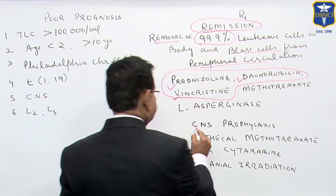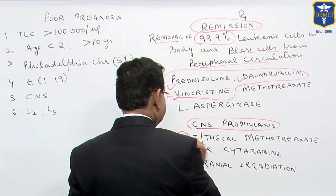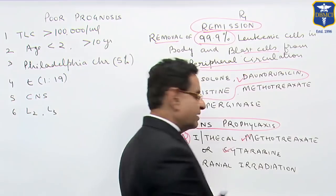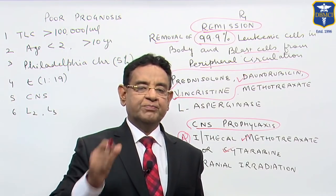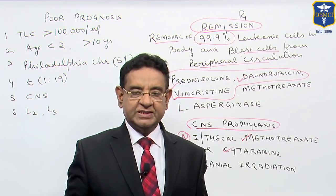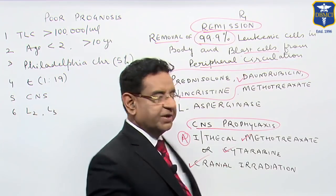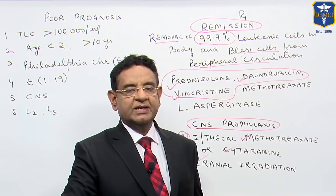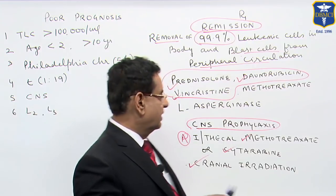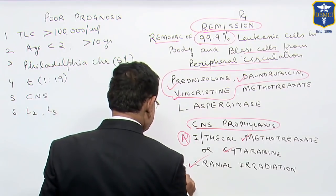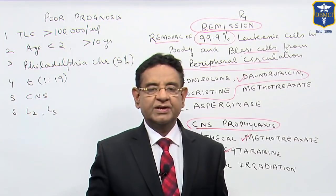We also give CNS prophylaxis. This can be done by intrathecal methotrexate or intrathecal cytarabine — that means we do a lumbar puncture and put the drug into the CSF — or we can go for cranial irradiation. After that, we have various drugs for the consolidation phase and maintenance phase. We can also go for bone marrow transplantation, which is the most definitive treatment.